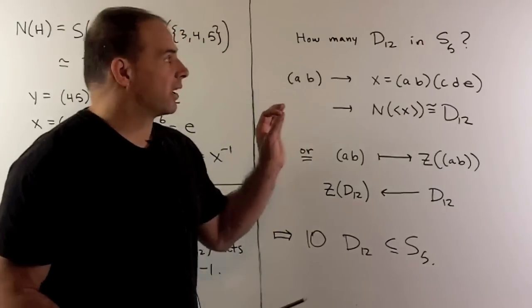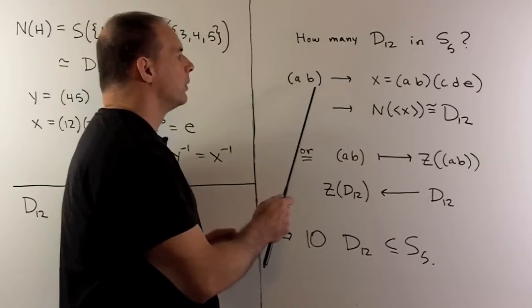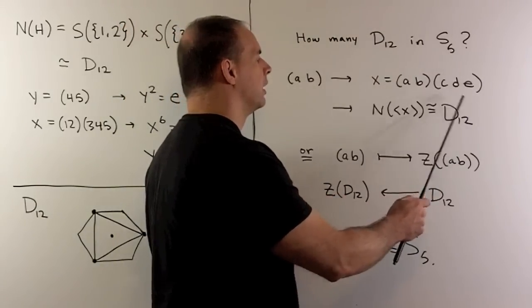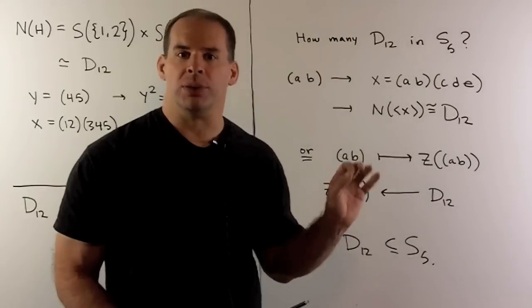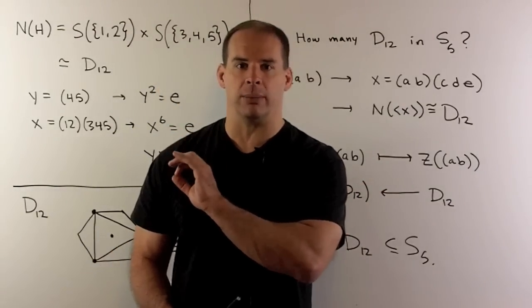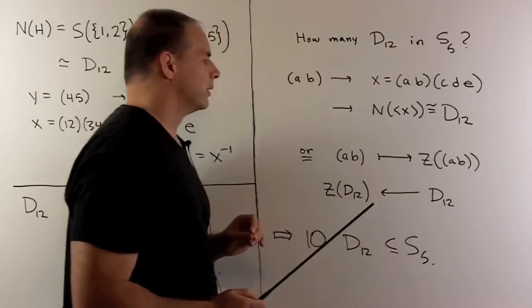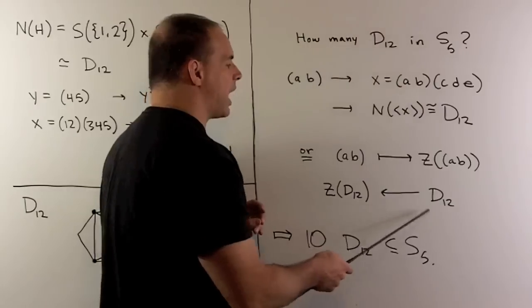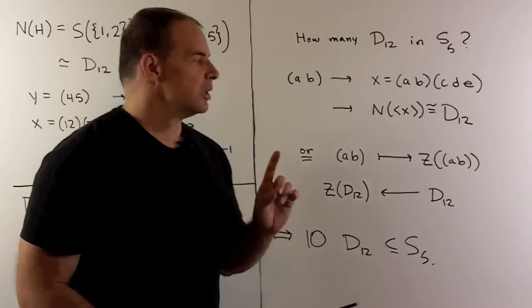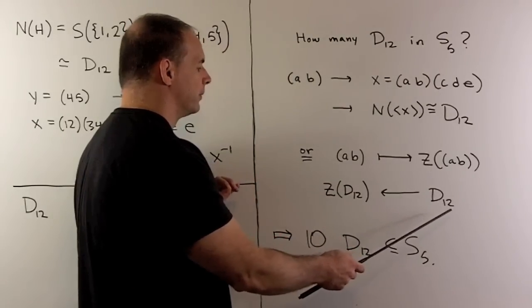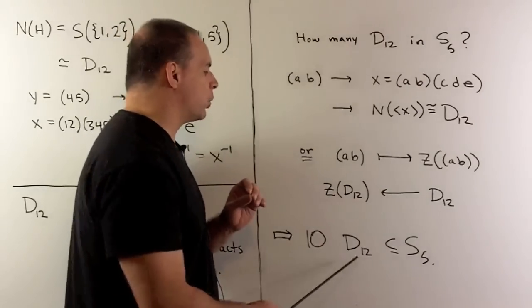Final question. We found a copy of D12 in S5. How many copies can we find? The recipe is start with a two cycle, take the letters we're not using, complete to an element of order six, take the subgroup that this generates and then take its normalizer. By our construction from before, that's going to be isomorphic to D12. Our construction from before didn't depend on the labeling. Another way to think of this, we're just going to take this two cycle, send it to its centralizer in S5. To go in the other direction, just note if we take our copy of D12, we can map this to the center of that D12. What will be in there is the identity element and a two cycle. So that's going to give us a one-to-one correspondence. Now all we need to do is count the number of two cycles, but we've already seen that there's 10 of those. So I have 10 copies of D12 in our S5.